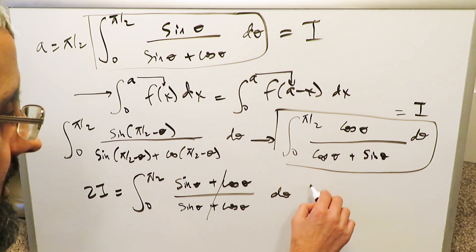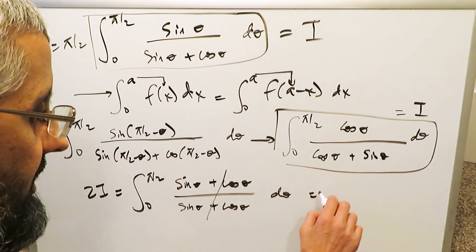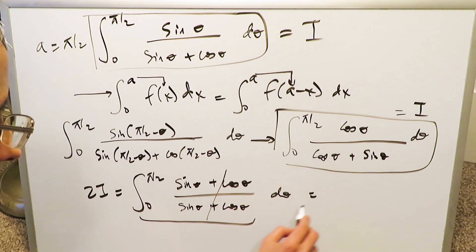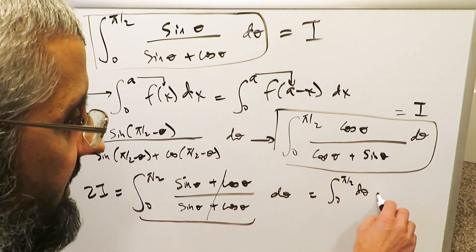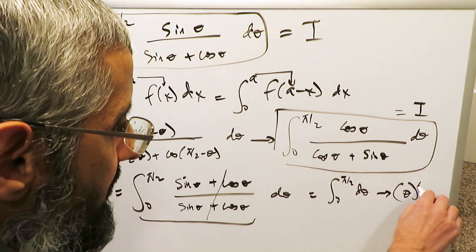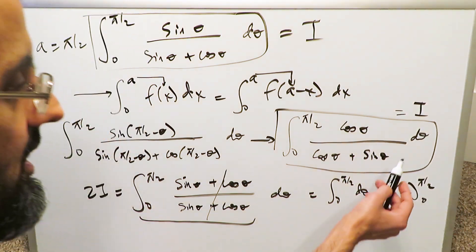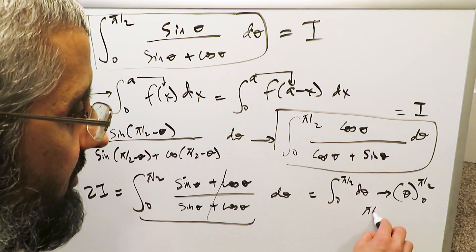So in essence, what you end up seeing here is this entire integral is equal to 0 to π/2, dθ. And you know the anti-derivative here is θ from π/2 and 0. When you compute that, your outcome here is π/2.